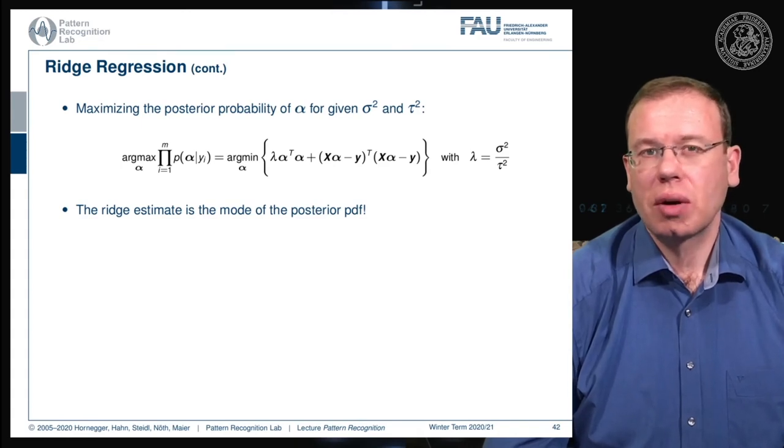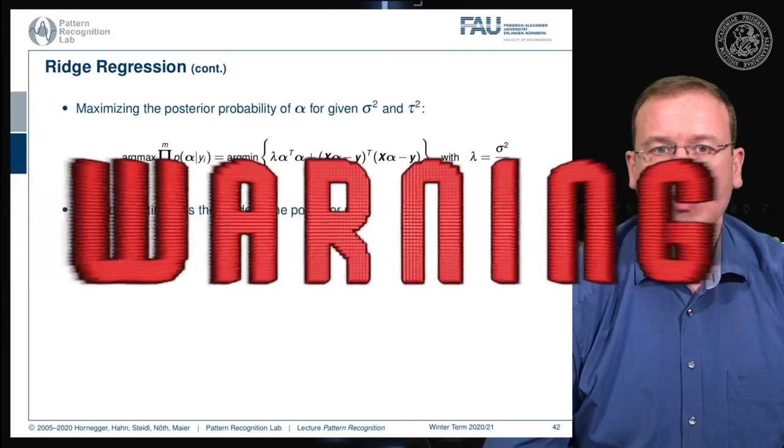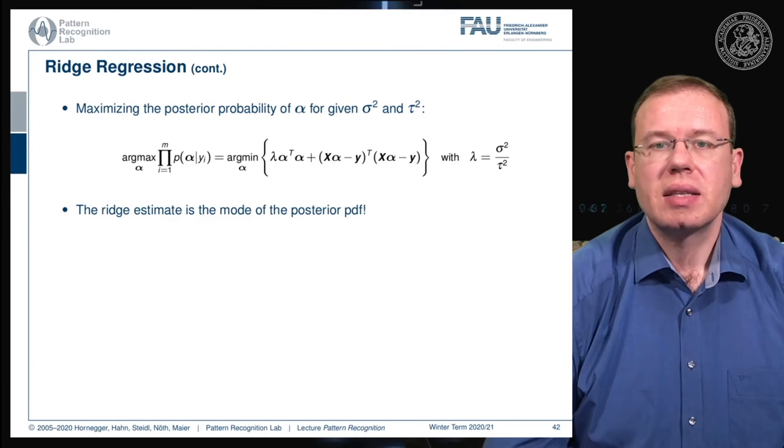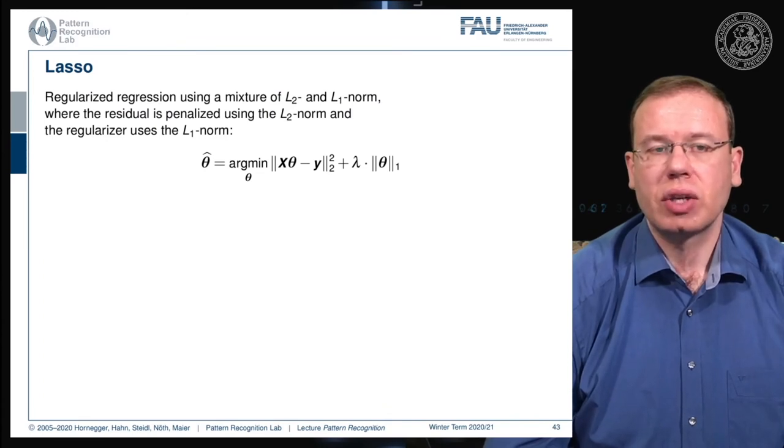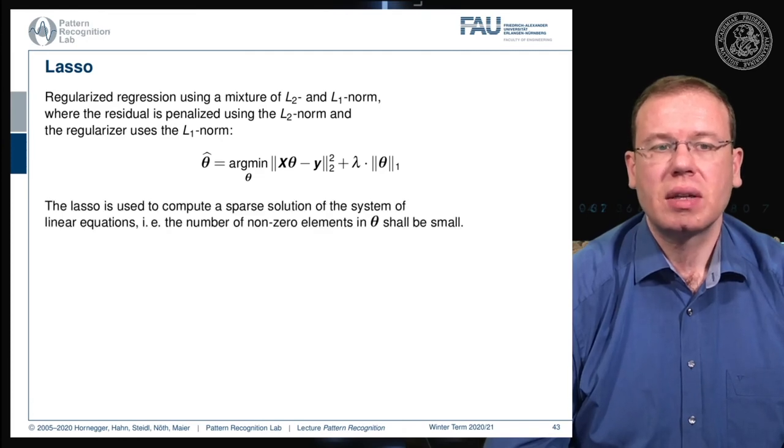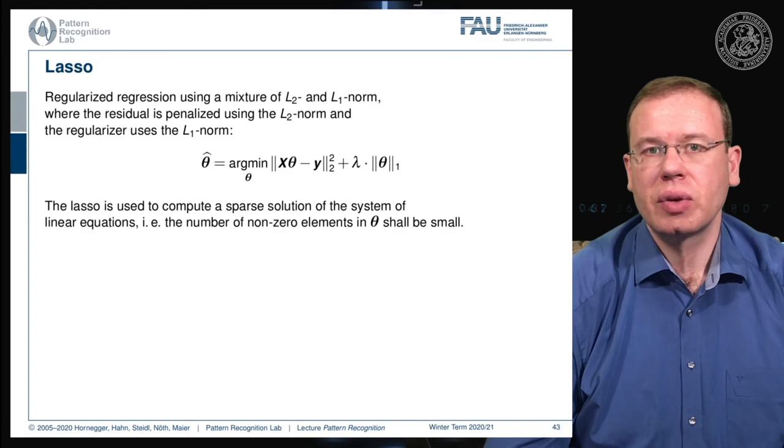This is already a pretty cool observation. If you're preparing for the exam, this is really something you should be aware of. Let's look into other forms of regularization. We've seen that ridge regression is using an L2 norm, but obviously we can use other norms for the regularization of our parameters. The so-called lasso is a very typical choice applied to the parameter theta. The idea of lasso is that you are trying to get sparse solutions for the parameter vectors. This is very often used to compute sparse solutions of the system of linear equations, trying to achieve a large number of zero elements in your solution vector. You want to have only very few non-zero elements.